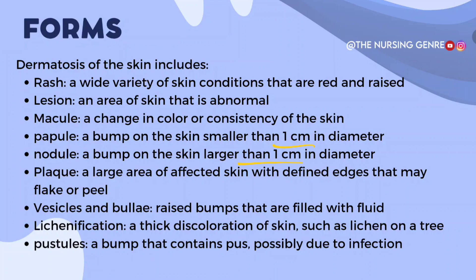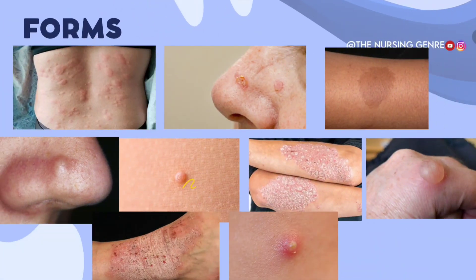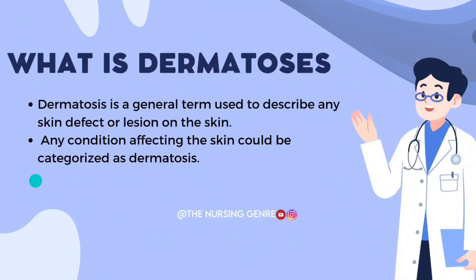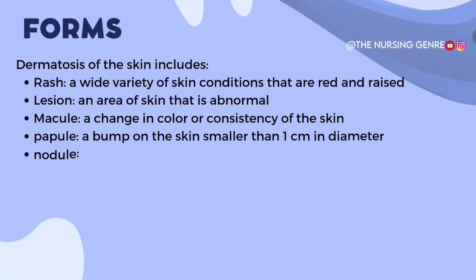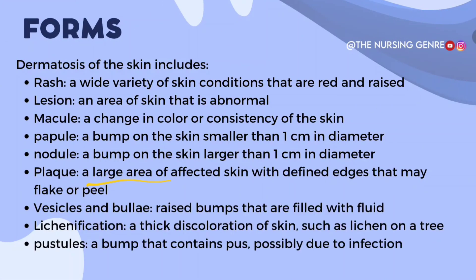Next one is nodule, which is larger than 1 cm. And the next one is plaque — a large area of affected skin with defined edges that may flake or peel. So if you have defined edges, you can peel out the skin.